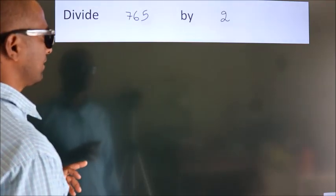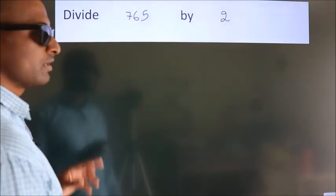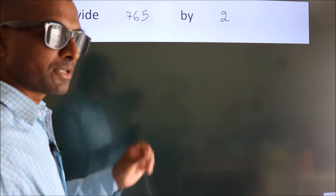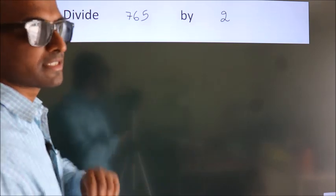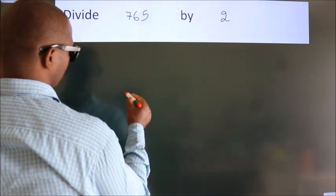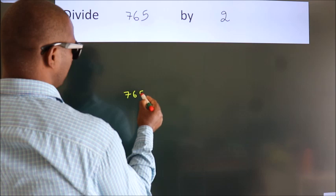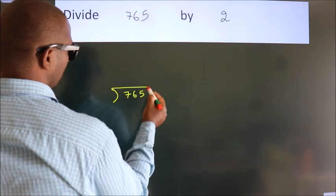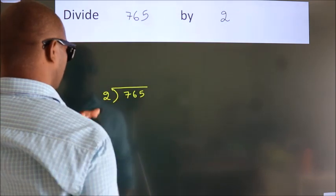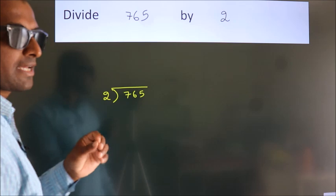Divide 765 by 2. To do this division, we should frame it in this way: 765 here, 2 here. This is your step 1.